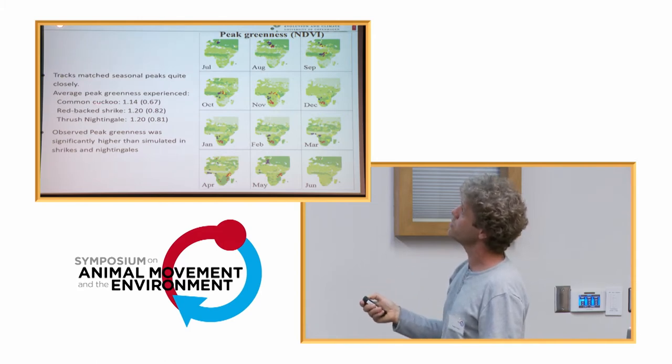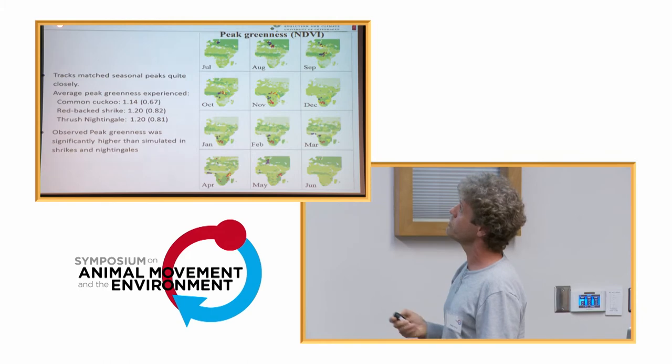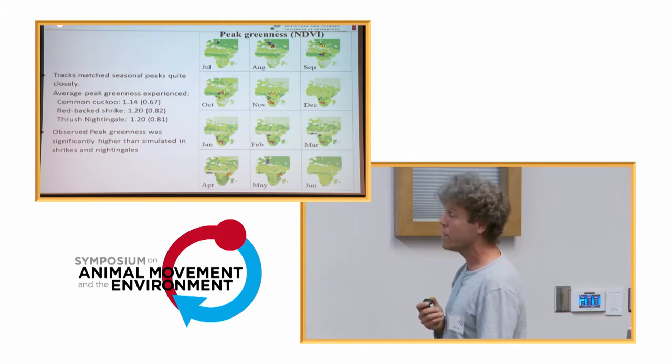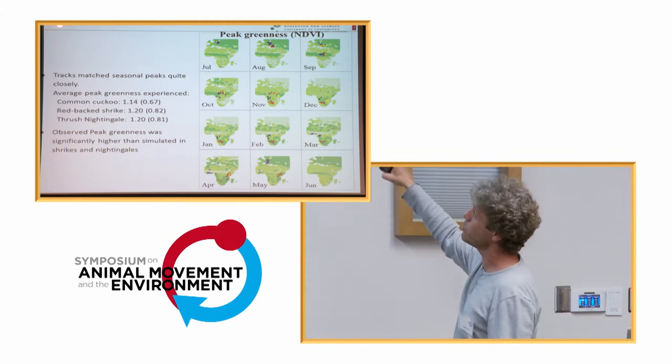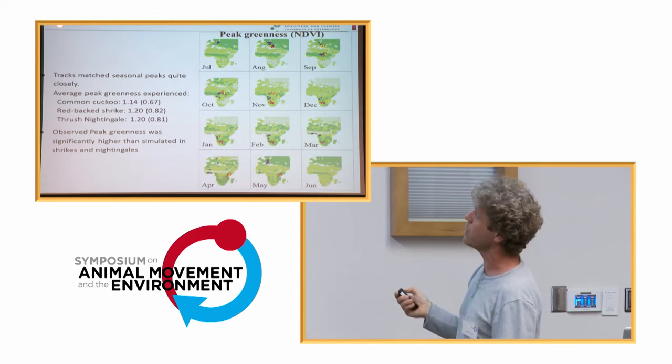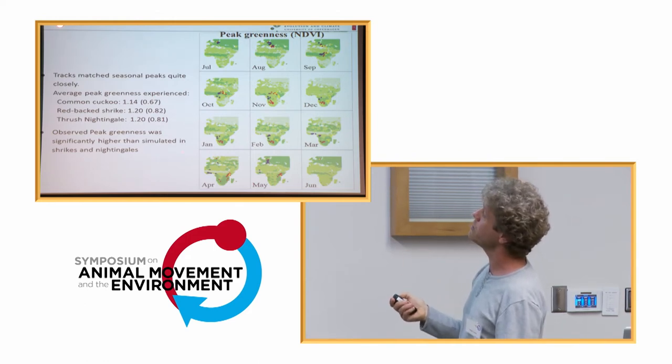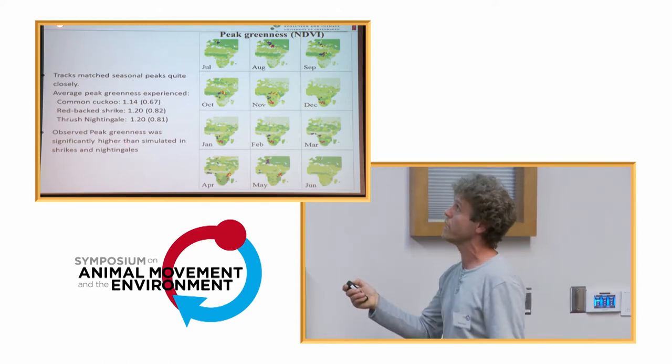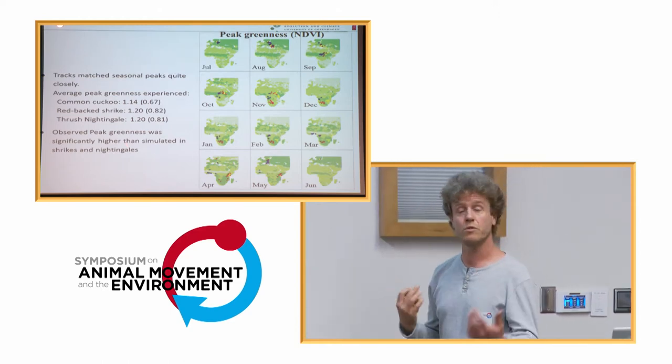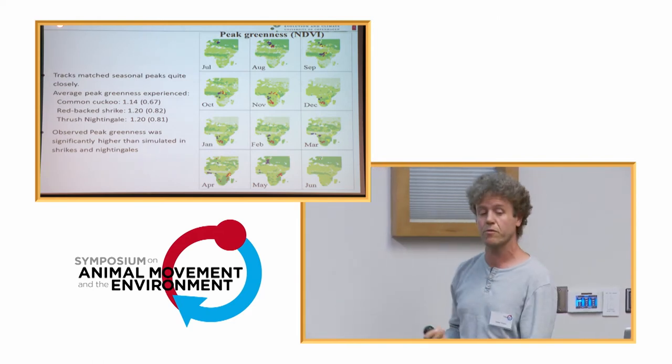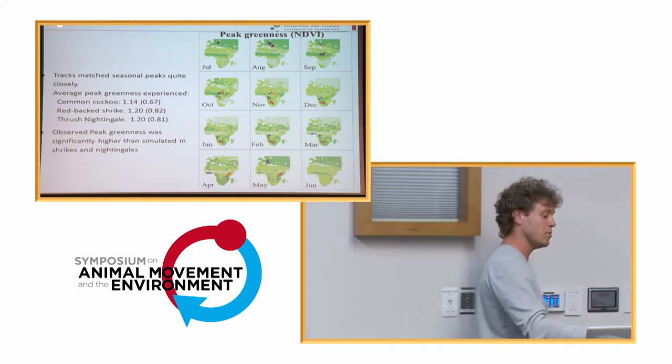The average peak greenness experience for the cuckoo is 1.14, which is the 67th quantile for the red-backed shrike, which is 1.20, and the 82nd quantile for thrush nightingale, 1.20, and the 81st quantile. We observed peak greennesses, they were significantly higher than simulated in shrikes in nightingales. So actually, for the cuckoo, for these restricted movements, the cuckoo is not following these peak greennesses as the other birds are.